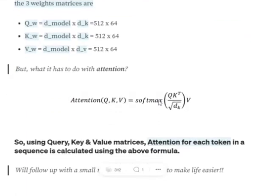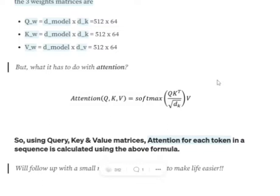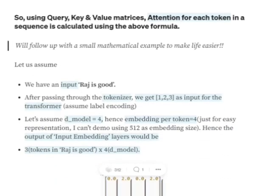Attention is calculated using this formula: softmax( Q × K^T / √d_k ) × V. We will run through a small example over a sentence to see how attention is calculated. Assume we have the input sentence 'raju is good.'